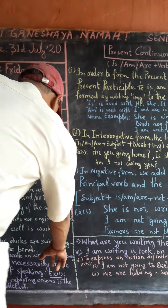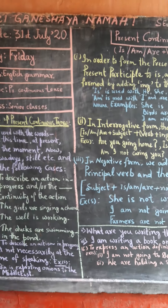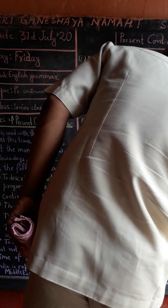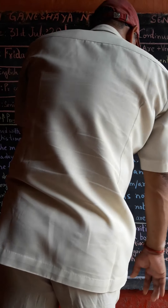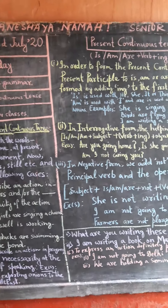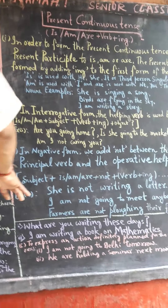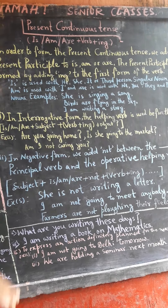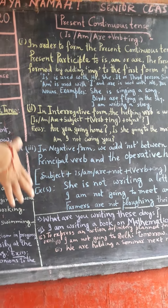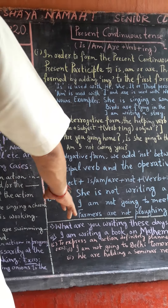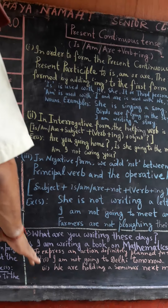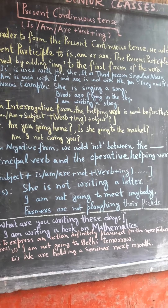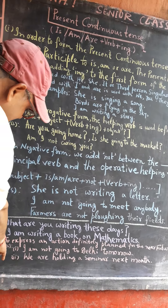It is used to describe an action in progress but not necessarily at the time of speaking. For example: 'What are you writing these days?' It is not certain that the writer is writing at that exact moment, but they are in the process. 'I am writing a book on mathematics' — this is a present continuous sentence.